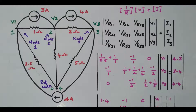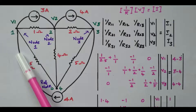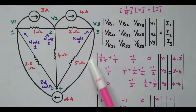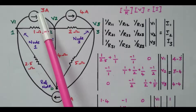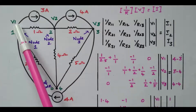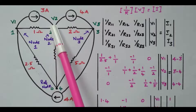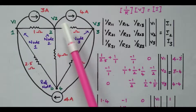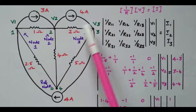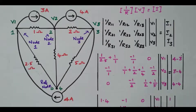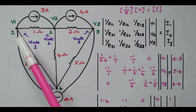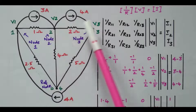Now see the current direction of this 4 ampere source — it is going towards node 1, that is away from node 3 and going towards node 1. Similarly, this 3 ampere source is away from node 1 and going towards node 2. This 4 ampere source is away from node 2 and going towards node 3. By applying Kirchhoff's law, we can frame the matrix, from which we can find node voltages V1, V2, and V3.